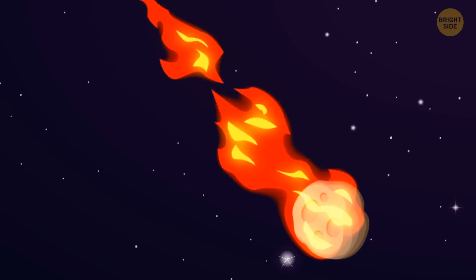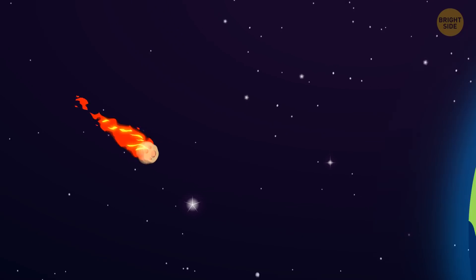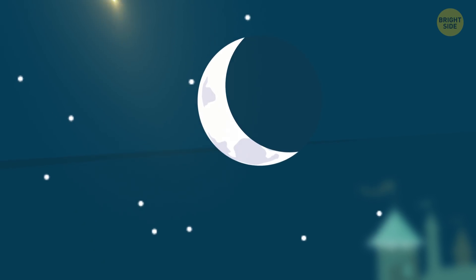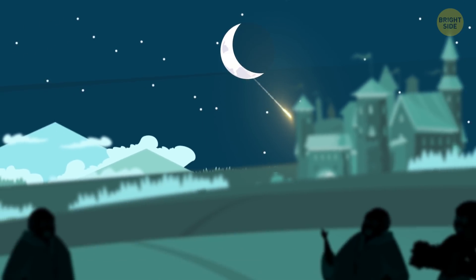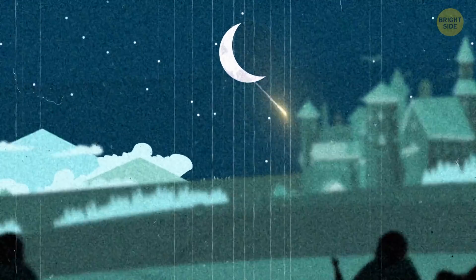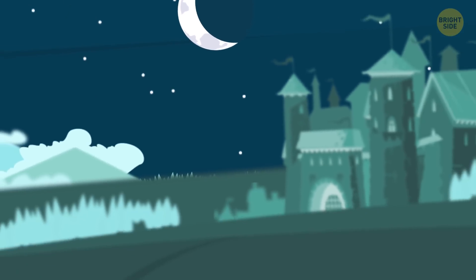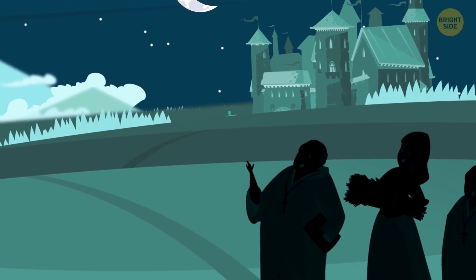Perhaps they did see an asteroid fall. Only it was falling on the Earth itself. And they perceived the light from the burning meteorite as something sinister happening on the Moon. Or maybe the monks were simply imagining things. There's no witnesses to this event other than them.